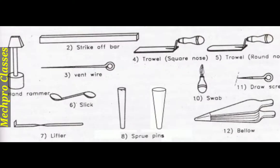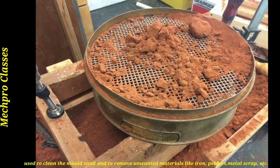Here you will find the swab, which is used for moistening the sand. The trowel is also there. These are also the molding tools and casting equipment you can see.